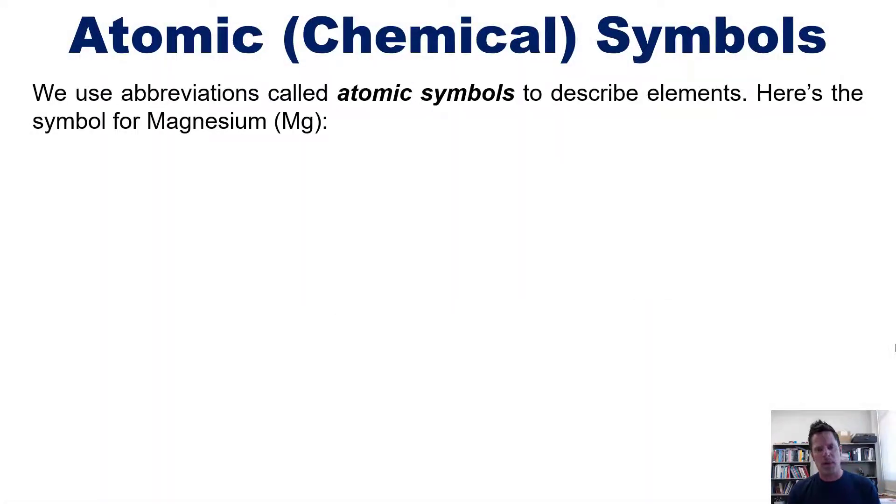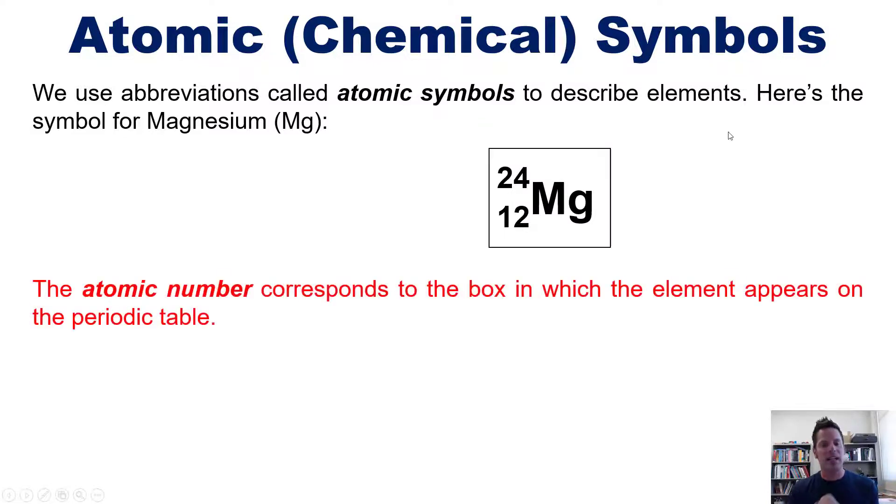We use abbreviations called atomic symbols to describe elements. Here's the symbol for magnesium - it's Mg. And we have some numbers written to its side. The atomic number, which in this depiction is the number 12 written at the lower left, corresponds to the box in which this element appears on the periodic table.